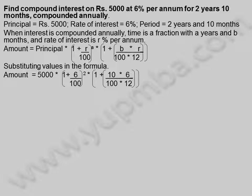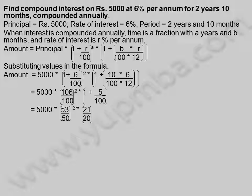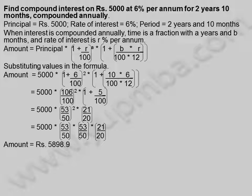Substituting values: Amount = 5,000 × (1 + 6/100)² × (1 + 10×6 / (100×12)) = 5,000 × (106/100)² × (1 + 5/100) = 5,000 × (53/50)² × (21/20) = 5,000 × (53/50) × (53/50) × (21/20).